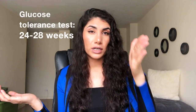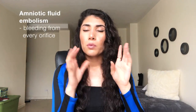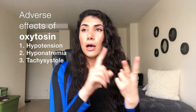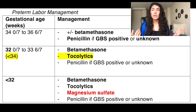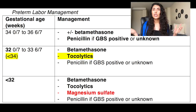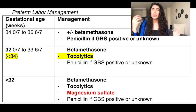Gestational diabetes — note that the glucose tolerance test is done between 24 and 28 weeks. Amniotic fluid embolism — know the difference, where the biggest clue with amniotic fluid embolism is that the patient is going to be bleeding from everywhere. The adverse effects of oxytocin are really important — there are three things: hypotension, hyponatremia, and tachysystole. It's also important to recognize when you give magnesium, when you give betamethasone, as well as tocolytics. Tocolytics are basically going to relax the uterus so it doesn't contract — commonly given to preterm patients alongside betamethasone, which is a corticosteroid that has an effect on the fetus before it comes out.